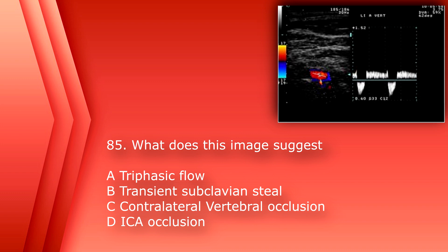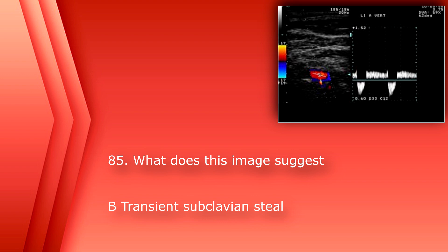Number 85: what does this image suggest? A. Triphasic flow. B. Transient subclavian steal. C. Contralateral vertebral occlusion. Or D. ICA occlusion. The answer is B. Transient subclavian steal.